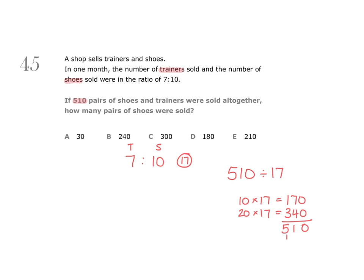So in total we can make groups of 17 from 510 30 times altogether. This means we can multiply 7 by 30 and also 10 by 30, and this will tell us how many pairs of each kind of shoes were sold. 7 times 30 is 210. 10 times 30 is 300.